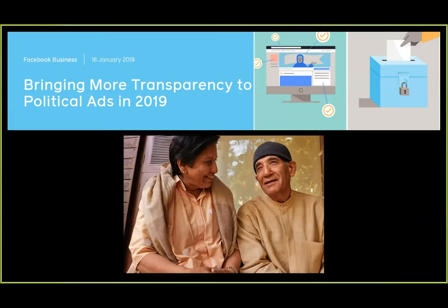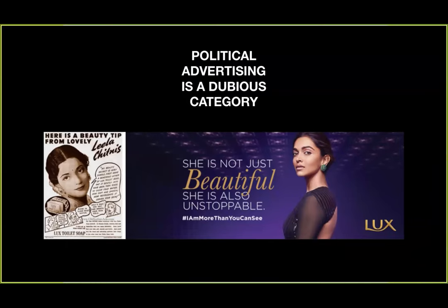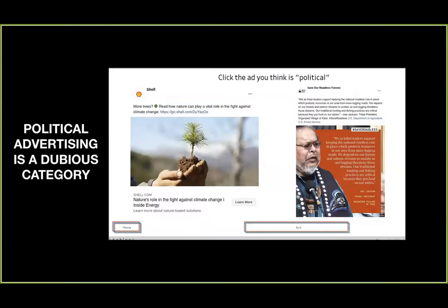I'm going to look at the problematics with political advertising as a category and with transparency as the response. Transparency is available only for ads classified as political. The politicalness of ads is determined by Facebook by looking at two things: either who is creating the ads, or what the ads are about. The very fact that all ads circulate in targeted or engagement-optimized ways arguably makes all ads on the platform inherently political. But Facebook carves out a neat category of political ads by creating a binary between commerce and advocacy, saying commercial ads are not political and therefore transparency data will not be available about them.